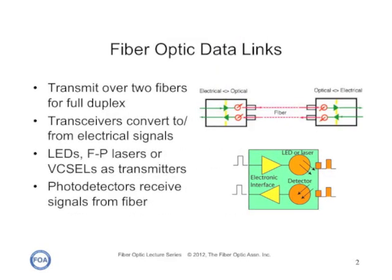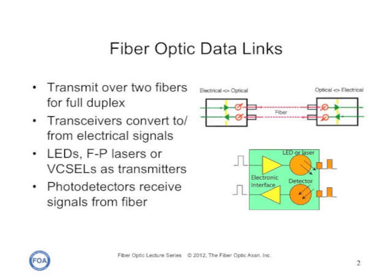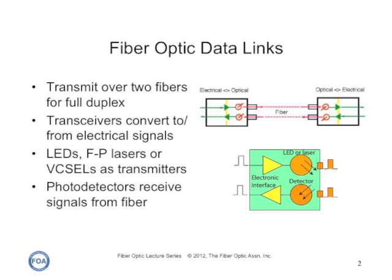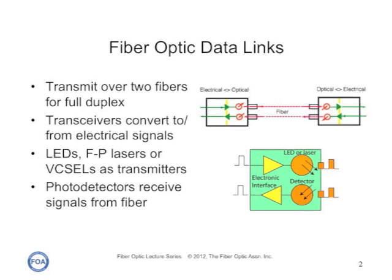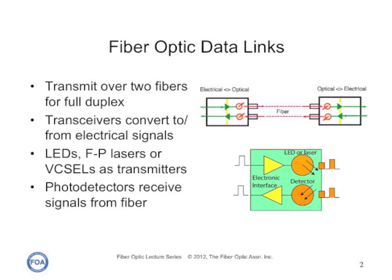A fiber optic data link consists of a transmitter, which takes an electrical input and converts it to an optical output using a source — typically an LED, laser diode, or VCSEL. The light from the transmitter is coupled into the fiber with a connector and transmitted through the fiber optic cable plant.